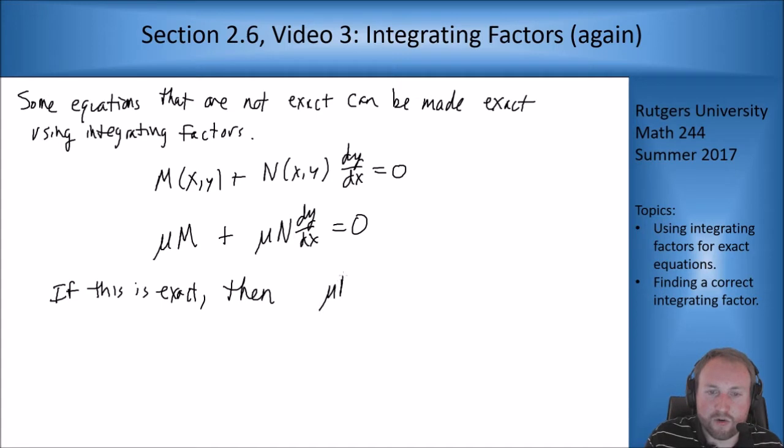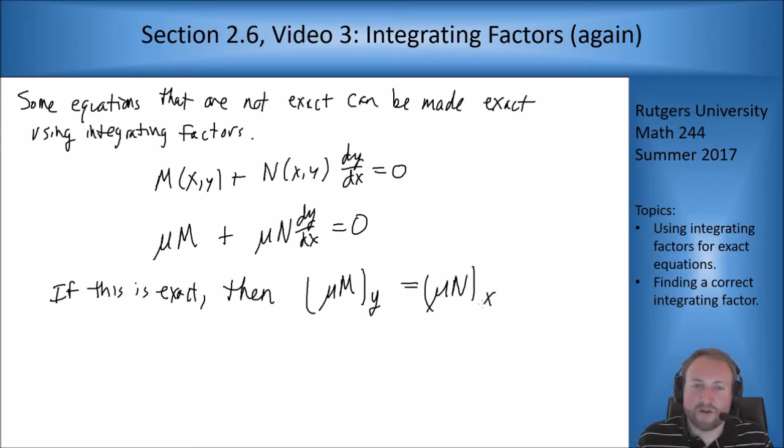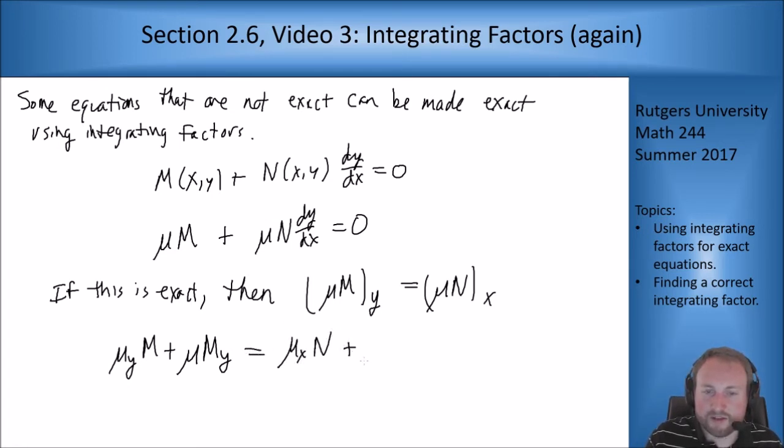I know that (μM)_y must equal (μN)_x. Because that's the normal condition for exact equations. This turns into product rule: μ_y times m + μ times m_y equals μ_x times n + μ times n_x. We have to find a μ that solves that equation. Now that's hard. That's annoying and not really fun to do.